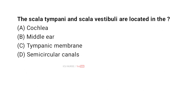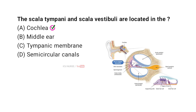The scala tympani and scala vestibuli are located in the — and the correct answer is A. Cochlea. The scala tympani and scala vestibuli are fluid-filled chambers in the cochlea of the inner ear. They help transmit sound vibrations through the cochlea, which are crucial for hearing as they stimulate sensory cells that send sound signals to the brain.